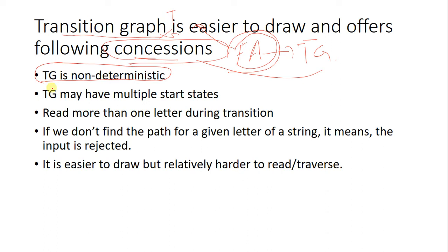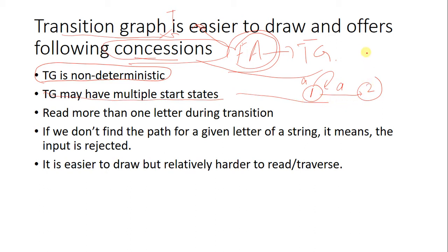Non-determinism means: if you draw a transition graph and for a single letter A you have two options — you can stay at state 2 or you can go to state 2 — this is called non-determinism. At a given state, for a single letter, you have two paths.